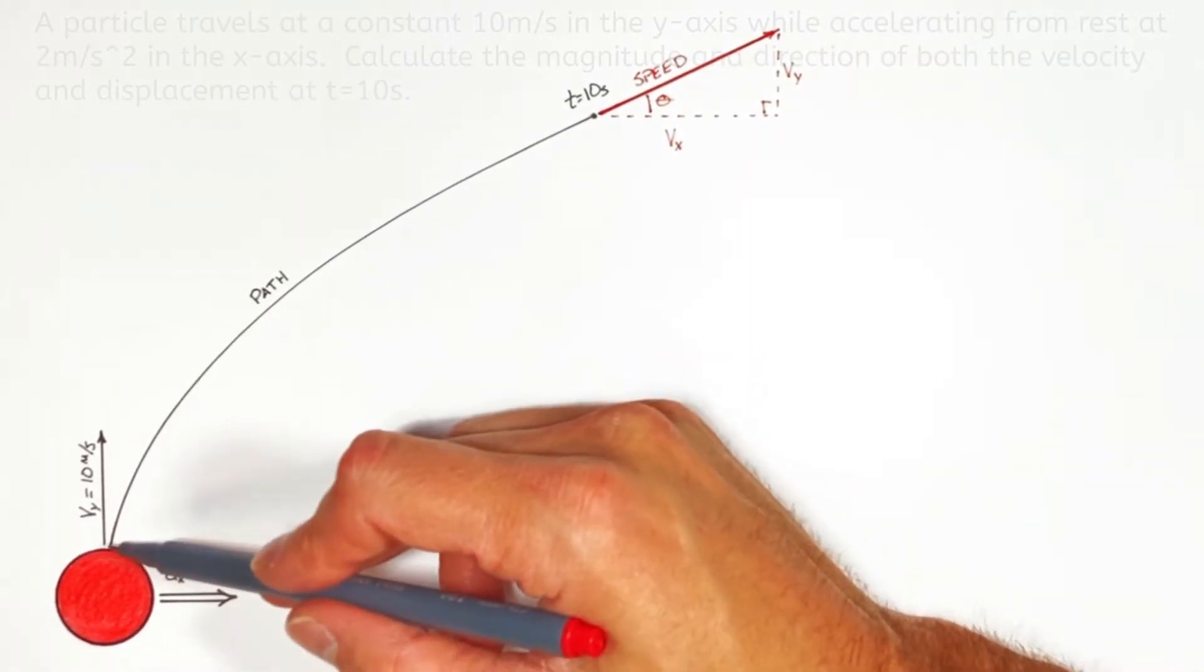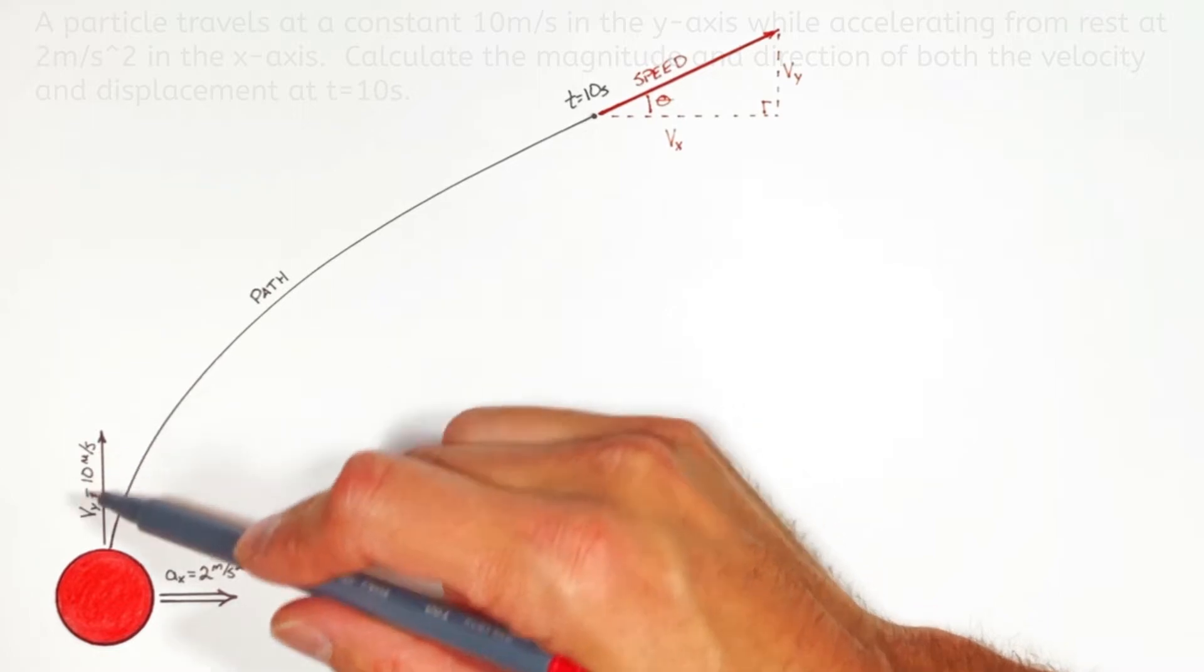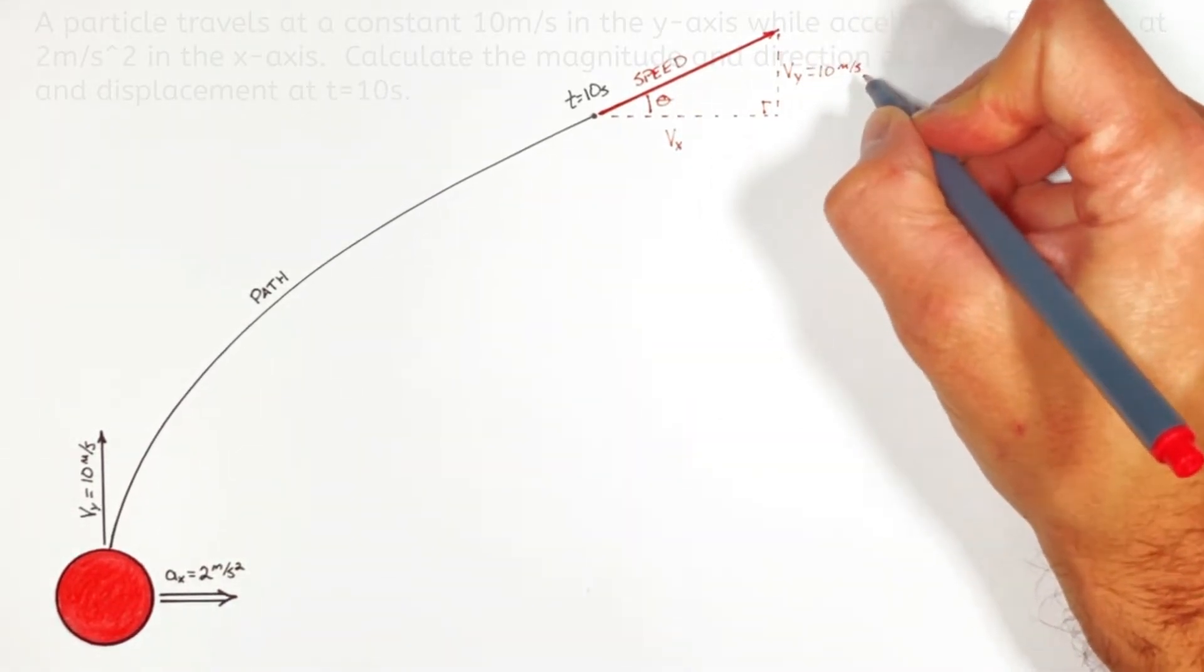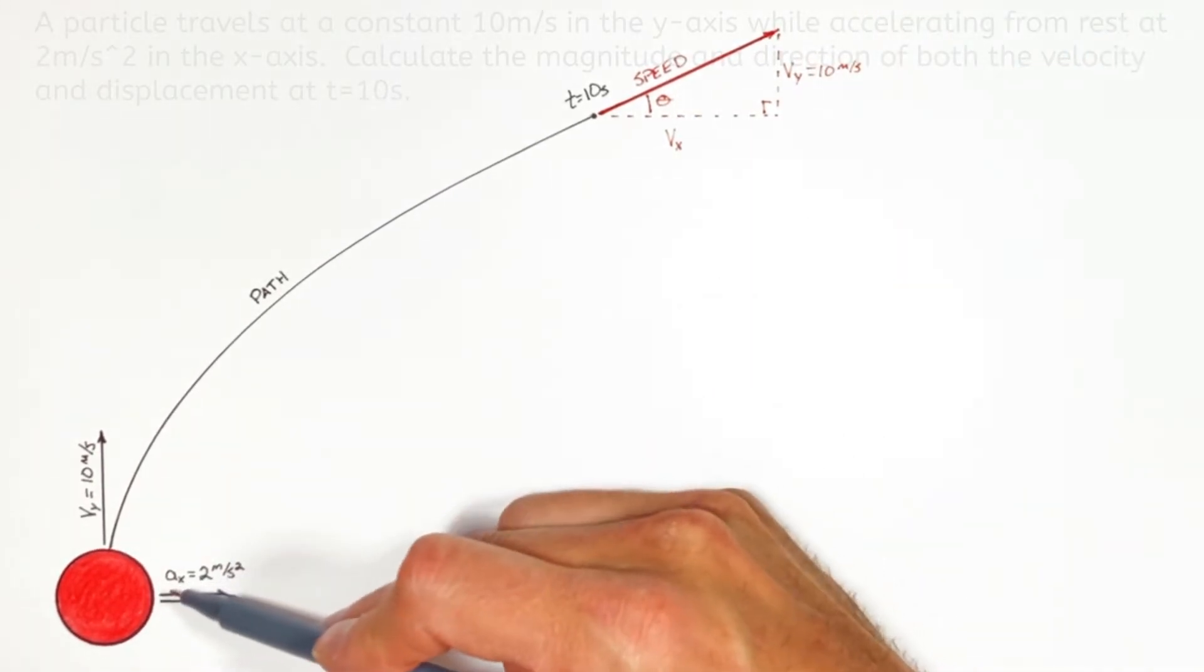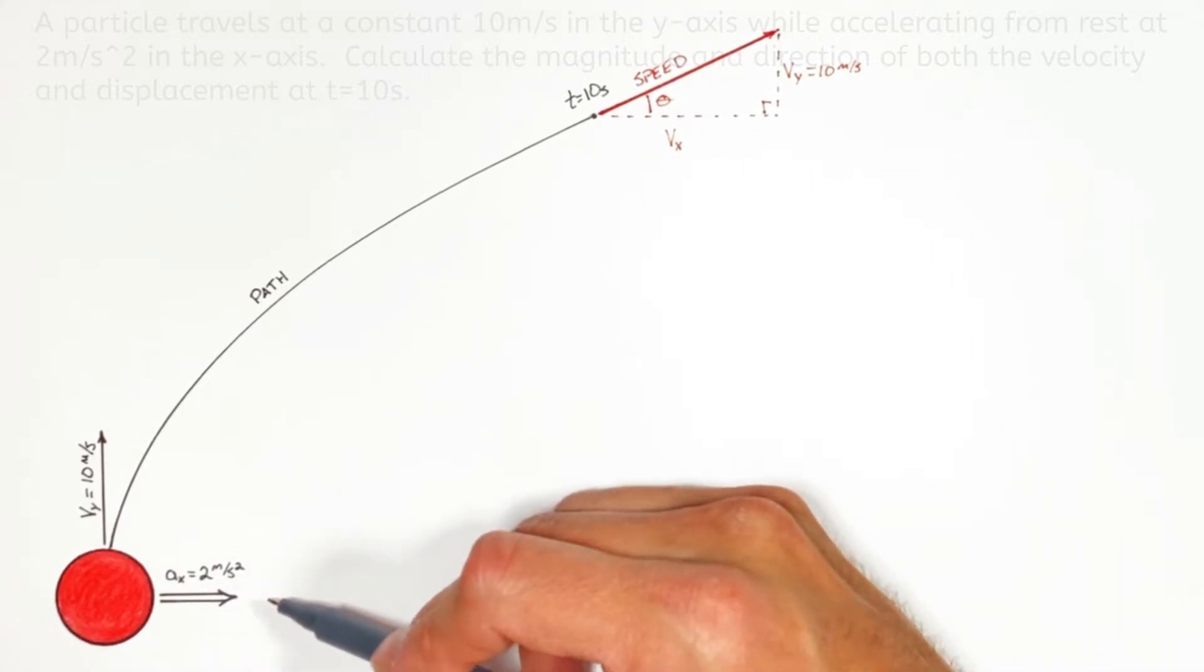Now going back to the problem we know this ball is always going to be moving in the y-axis at 10 meters per second. And in the x-axis the ball is going to be accelerating from rest at 2 meters per second squared.